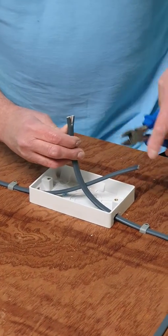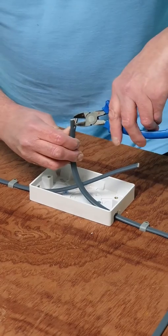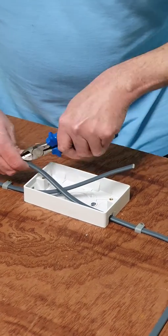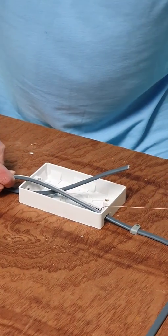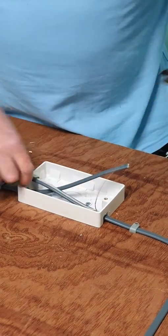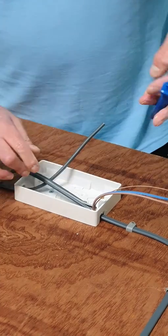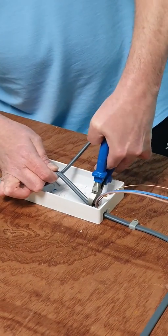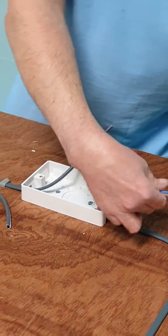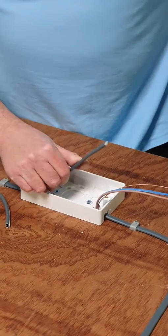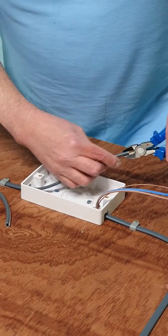Snip down the middle of the twin and earth. Grab the earth wire. Pull it through the sheathing making sure you're just staying inside of the enclosure. Take away the outer sheathing. Backside the cutters. Nip that away making sure you're not going to accidentally cut into the insulation or damage the conductors.